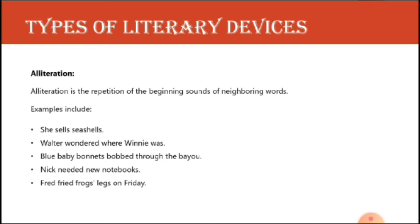The next one is alliteration. Alliteration is the repetition of the beginning sound of neighboring words — adjacent words whose first sound is the same. Note that sometimes letters are silent, like 'h' or 'p' in 'psychology,' so it is the sound that connects. For example: 'she sells seashells' — the 's' sound repeats. 'Walter wondered where wine was' and 'blue baby bonnets bobbed through the bayou' — the 'b' sound comes one by one. This is called alliteration.